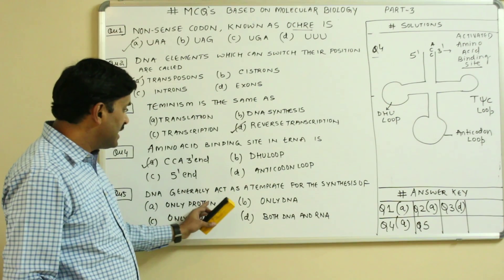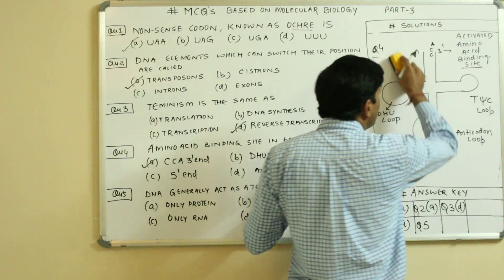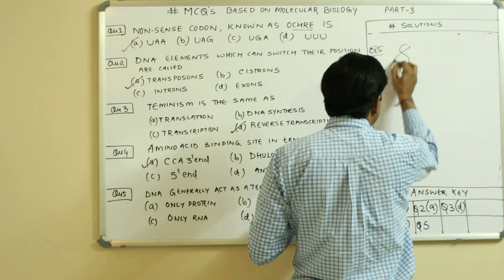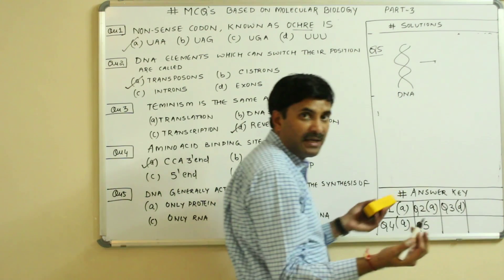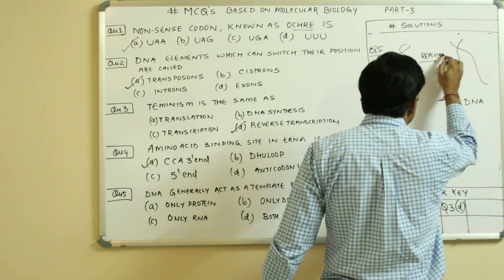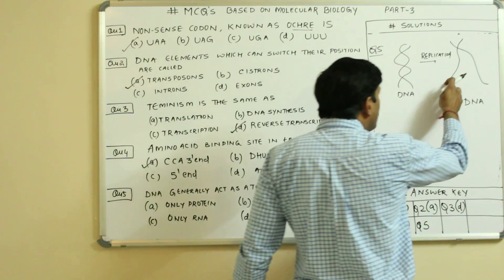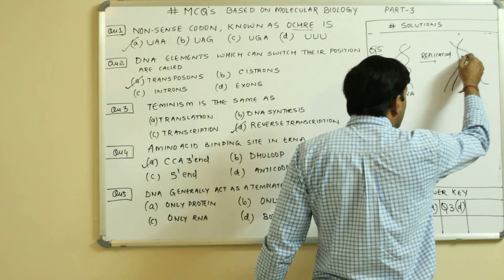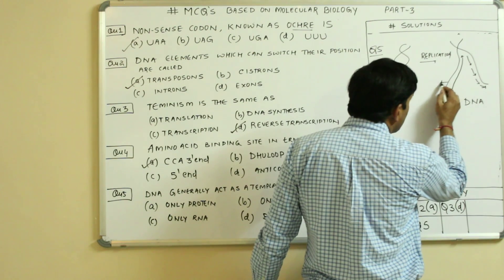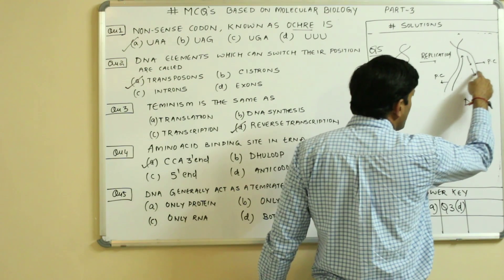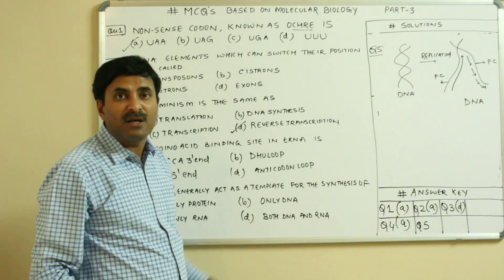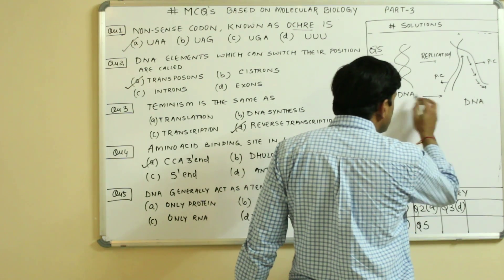Question five: DNA generally acts as a template for the synthesis of... DNA is double-stranded. In replication, DNA forms DNA, and both strands of the DNA act as template. On both parental chains, new chains are formed. So DNA acts as template for the synthesis of DNA.